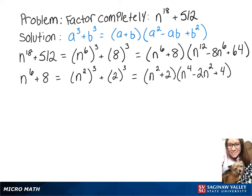So now when we put that all together, n to the 18th plus 512 is equal to n squared plus 2 times n to the 4th minus 2n squared plus 4 times n to the 12th minus 8n to the 6th plus 64.